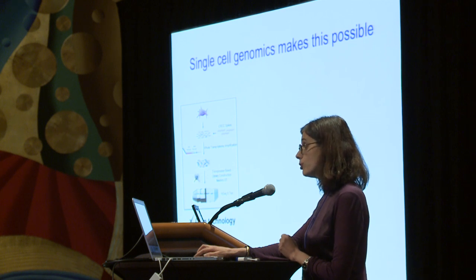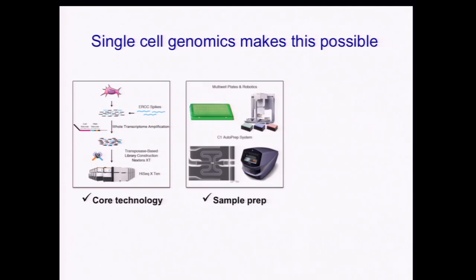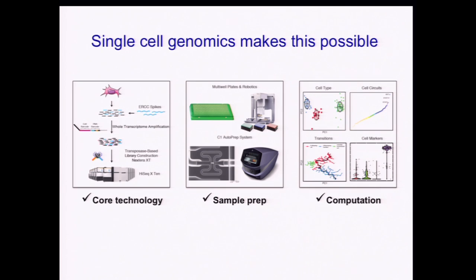This is because, first of all, we have new technologies — both in molecular biology and the volume of sequencing needed to measure the transcriptomes of single cells with great precision. We also have sample preparation methods, including the ability to isolate cells on multi-well plates and handle them with liquid handlers and microfluidics, that let us process a lot of cells at the right scale and for the right cost. And finally, we have rapidly maturing computational methods for everything from QC to cell type classification to identifying markers.